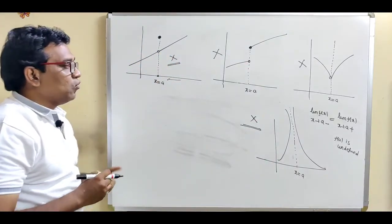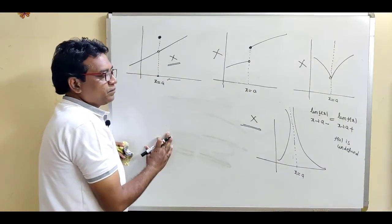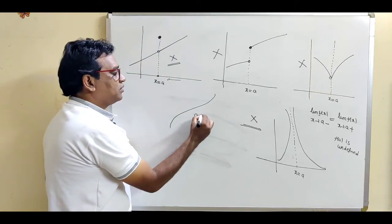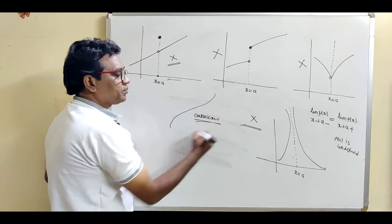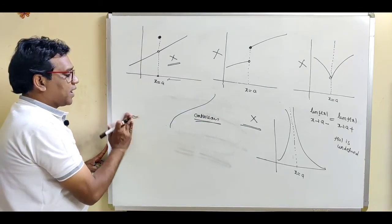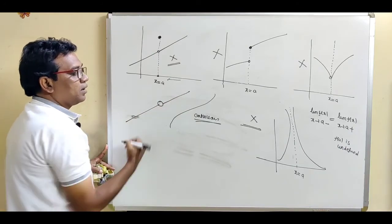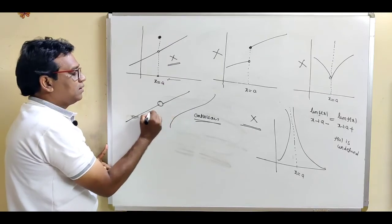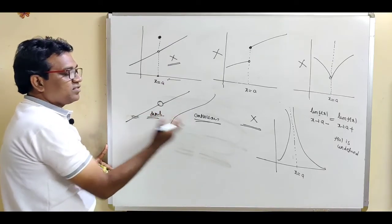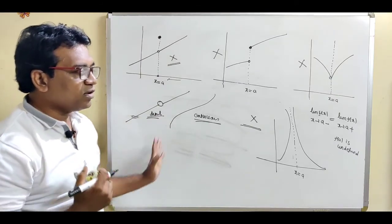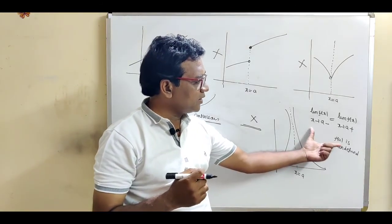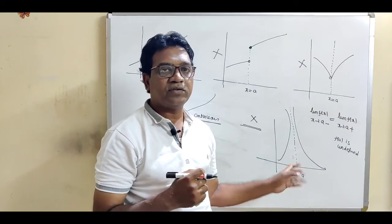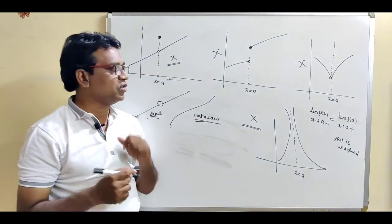To summarize: the logical definition of continuity is that if you can draw the graph without lifting the pen, the function is continuous; if there is some gap and you must lift the pen, it is discontinuous. The mathematical definition of continuity is: if limit from left equals limit from right equals value of function, then the function is said to be a continuous function.